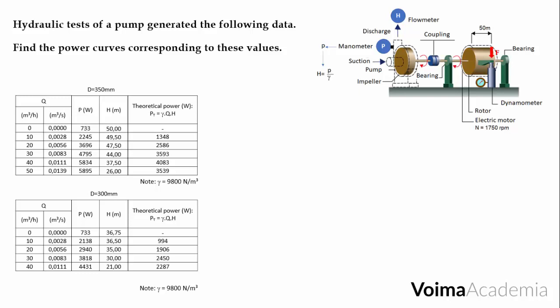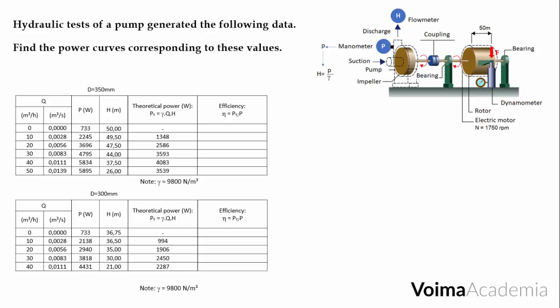The efficiency will be the ratio between the theoretical power and the real power. Here are the values for the 350 mm impeller. And here are the values for the 300 mm impeller.